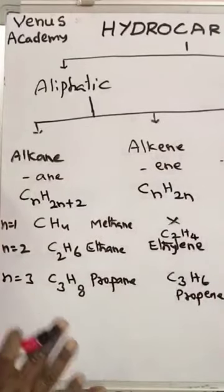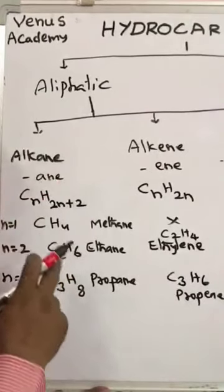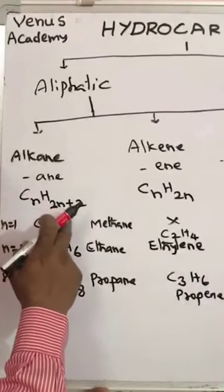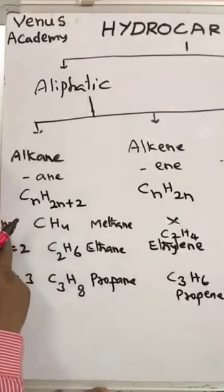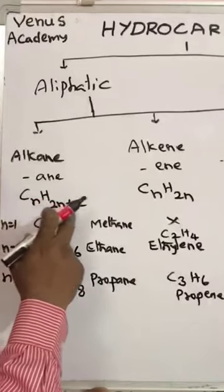Alkanes - what is the general formula of alkanes? All of you know that: CnH2n+2. That means if n equals 1, it will have 1 carbon, and 2n plus 2 means 1 times 2 is 2, plus 2 equals 4.